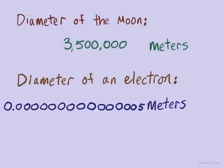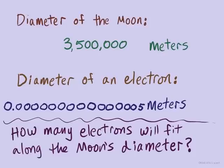So it can be useful to have a way of writing numbers without having to write all these zeros. And if you encounter a question where you're actually working with a large number and a small number — for example, how many electrons will fit along the moon's diameter — there's a way we can represent these numbers without all those zeros, which also makes calculations like division a bit easier.